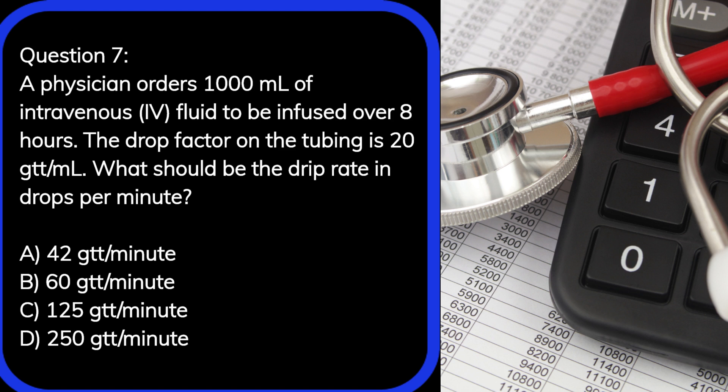A: 42 gtt per minute. B: 60 gtt per minute. C: 125 gtt per minute. D: 250 gtt per minute.